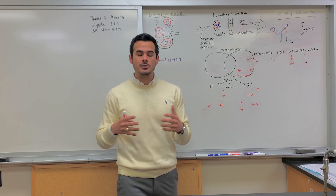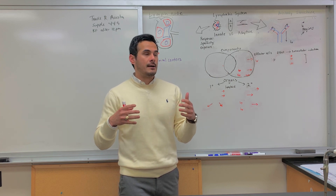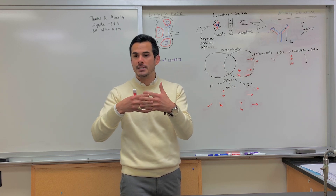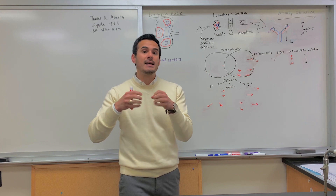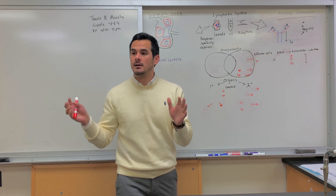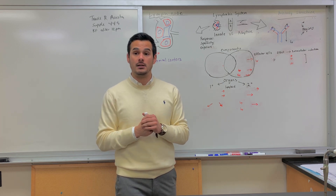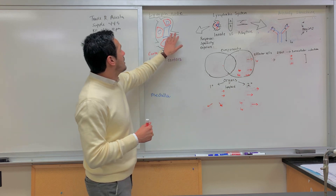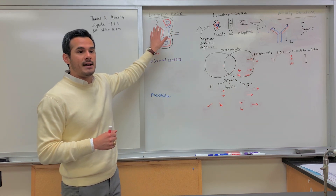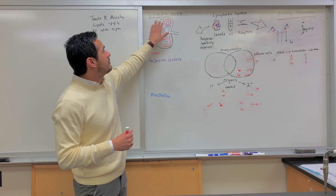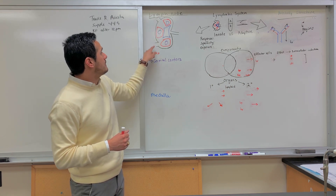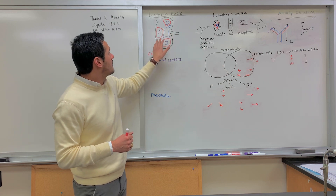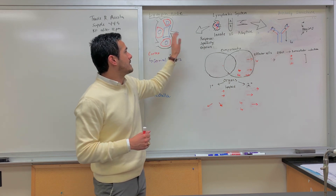At the capillary beds, whenever the arterioles and venules merge together, the fluid that leaks out is what gets picked up into the lymphatic system. What I have drawn here is a general schematic of the lymph node. Lymph flows through the afferent vessels and then leaves through the efferent vessels — this is where it's being filtered and then it comes out the other way.